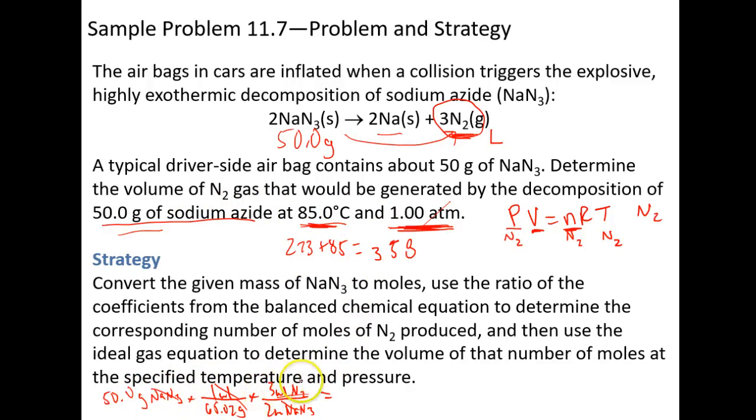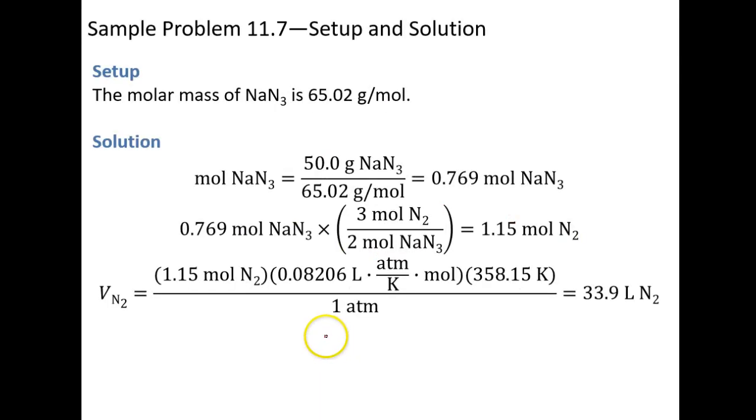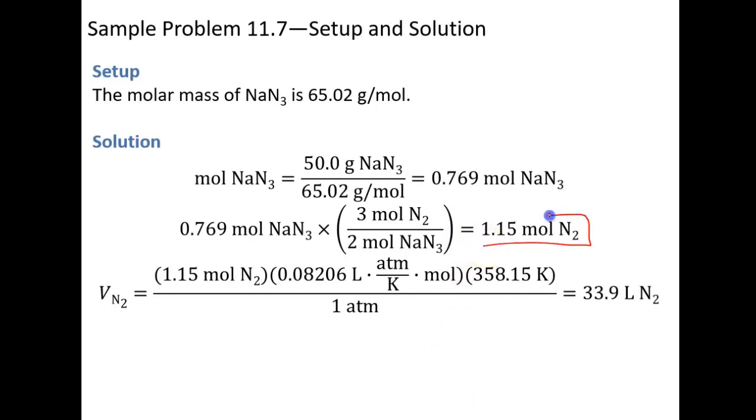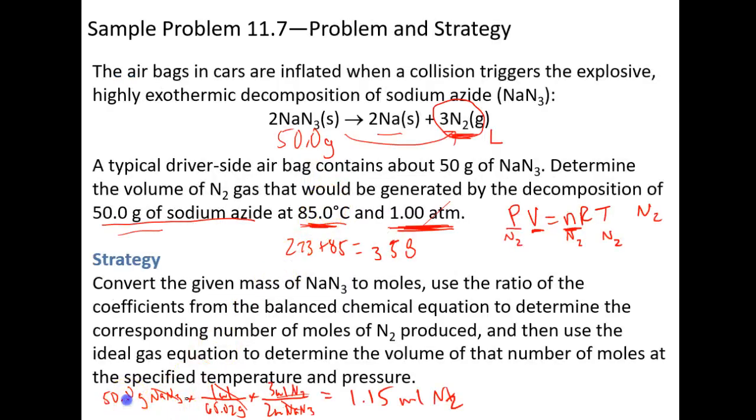So 50 times 3 divided by 65 divided by 2 gives me 1.15 moles of nitrogen. Notice that's where this number comes from. That's how they do it. The 50 divided by 65.02 times 3 divided by 2 gives me 1.15 moles. So that goes into here. So my pressure is 1, my moles is 1.15, R is 0.0821, and my temperature is 358.